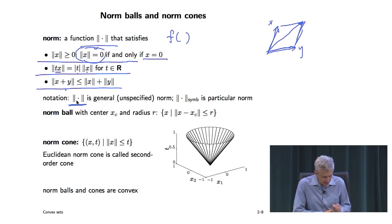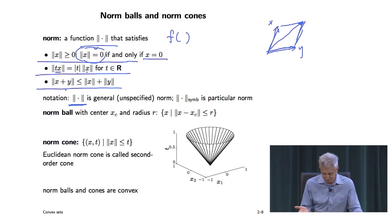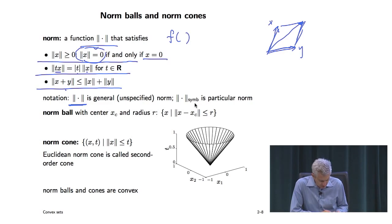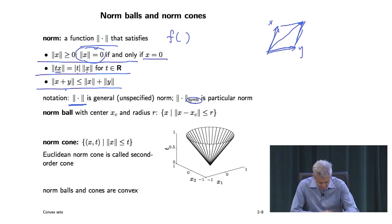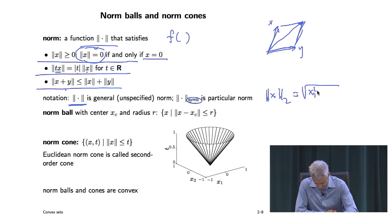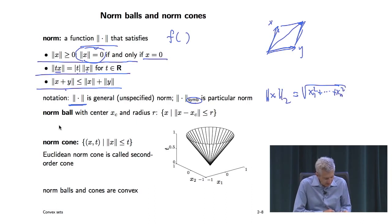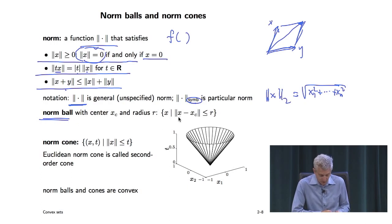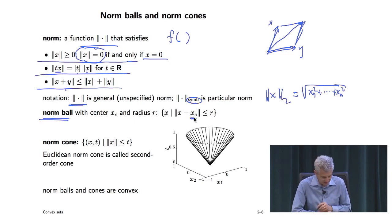When you write just a norm without a subscript, it usually means the assertion holds for any norm. For a specific norm, there's a mnemonic below — like the 2-norm for the Euclidean norm. A norm ball is the set of all points with distance less than r from a center, as measured by the norm.